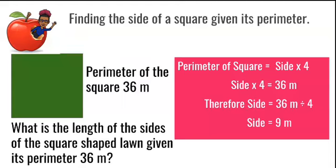Side multiplied by 4 equals 36 meters. To get the side length, we divide our perimeter — 36 — by the number of sides in the square. Remember, in the first lesson, to get the perimeter we took one side length and multiplied by 4. So now we do the opposite: we divide our perimeter by 4 to get the length of each side.